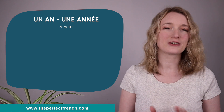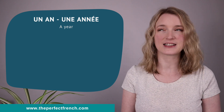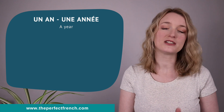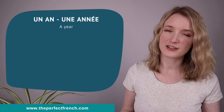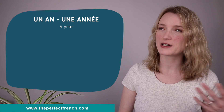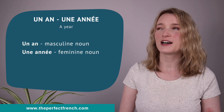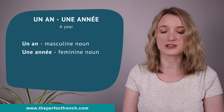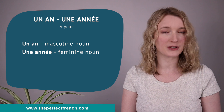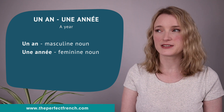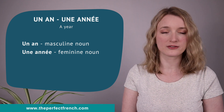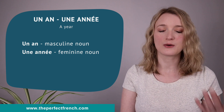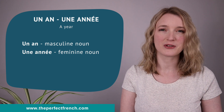The first thing you have to understand is that un an and une année have different genders. Like everything in French — why would it be the same? Un an is a masculine noun while une année is a feminine noun. It is going to be the same for all of the pairs we are going to see today.